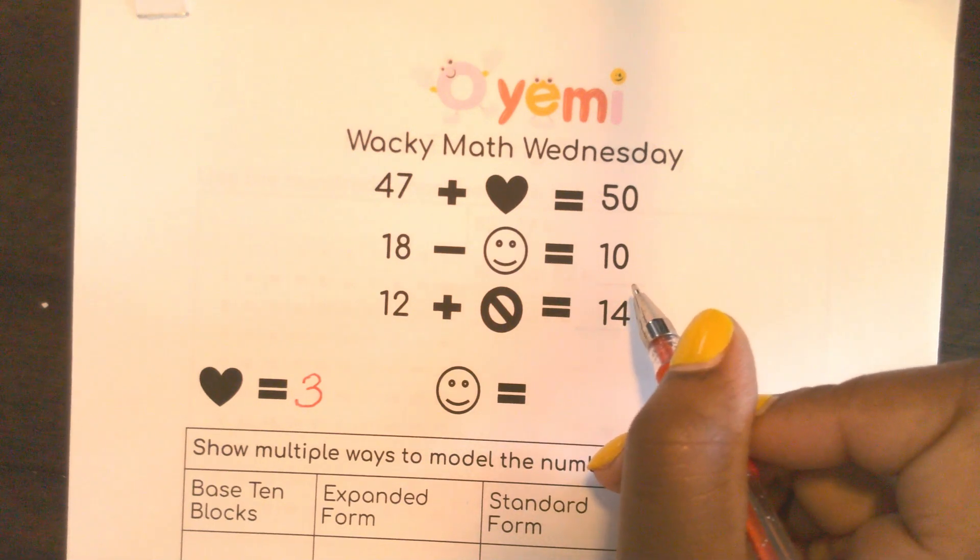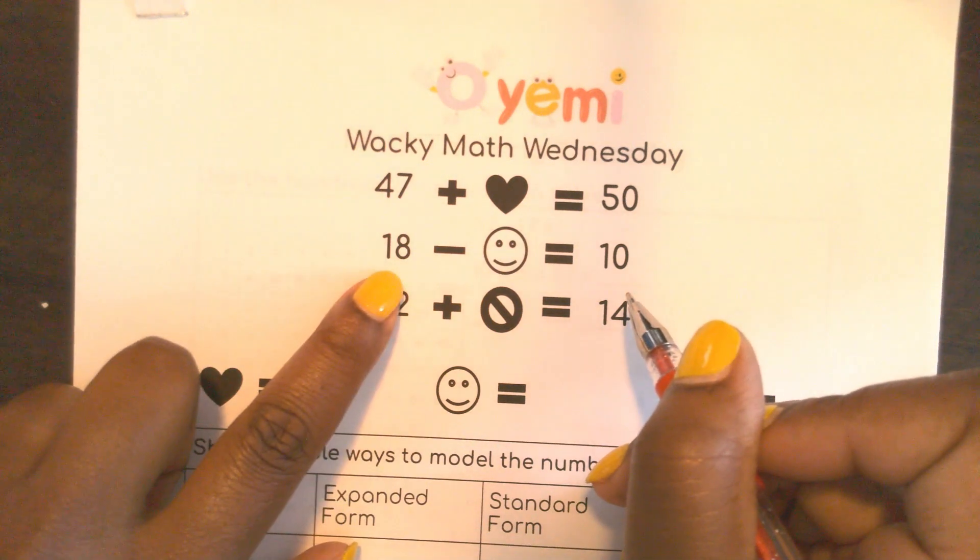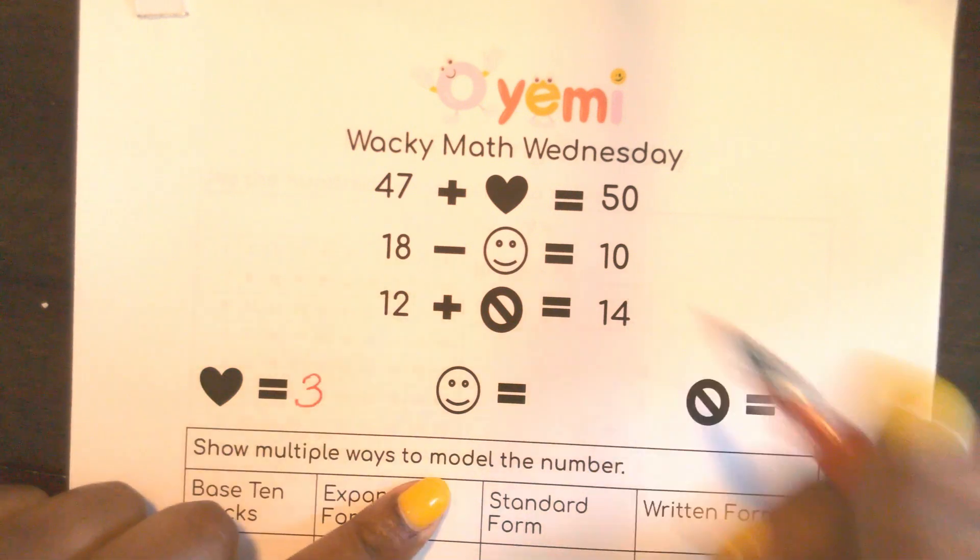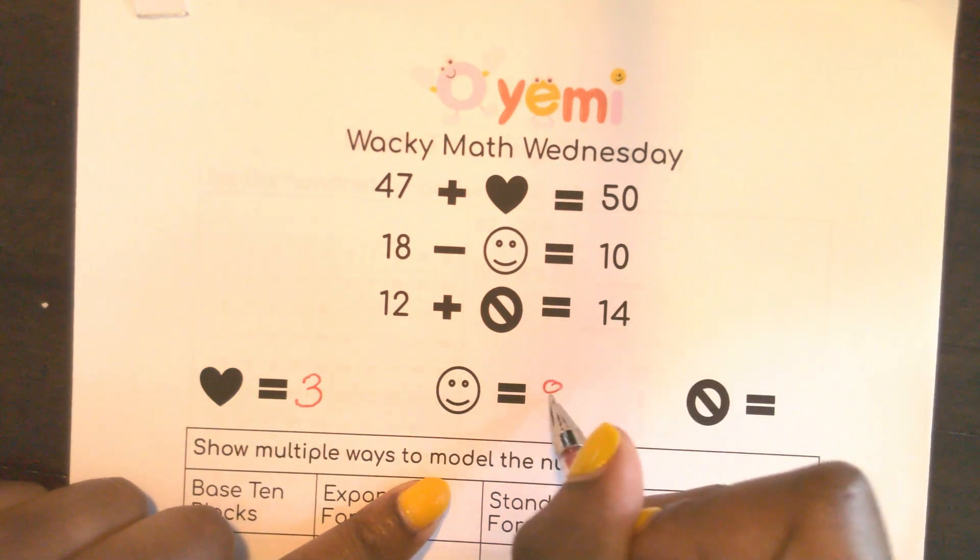It's 10s and some ones. How many ones do I need to take away here? I need to take away eight ones. I know you knew that.